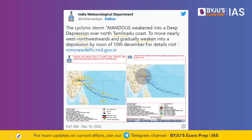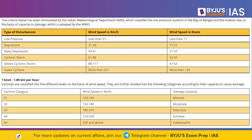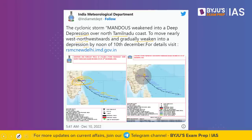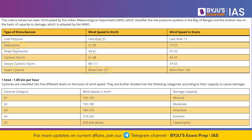Now let's focus on the severity of the cyclone. It is classified as a severe cyclonic storm. The types of disturbances are based on wind speed: Low pressure is less than 31 km/h; Depression is 31–49 km/h; Deep depression is 49–61 km/h; Cyclonic storm is 61–88 km/h; Severe cyclonic storm is 88–117 km/h; and Super cyclone is more than 221 km/h. Cyclone Mandus was formed as a severe cyclonic storm and has now turned into a depression, meaning wind speed is between 31 to 49 km/h.